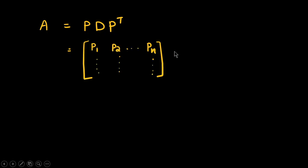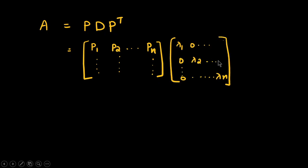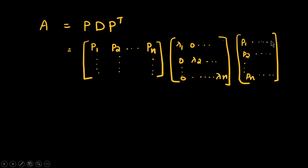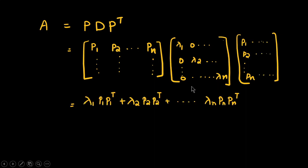Each column of P represents an eigenvector, and each row of P transpose represents an eigenvector, so the first row is P1, the second row is P2, and so on. When we do the multiplication, this reduces to a sum: lambda 1 times P1 times P1 transpose, plus lambda 2 times P2 times P2 transpose, and so on for each eigenvalue-eigenvector pair.